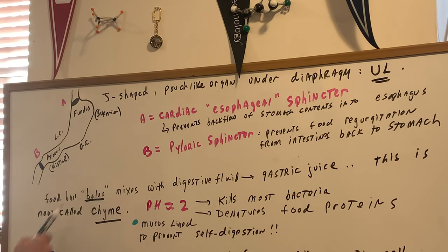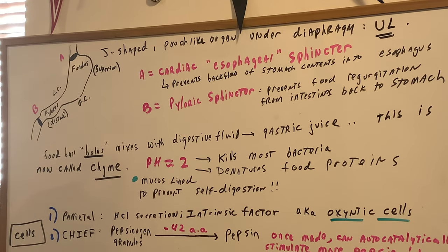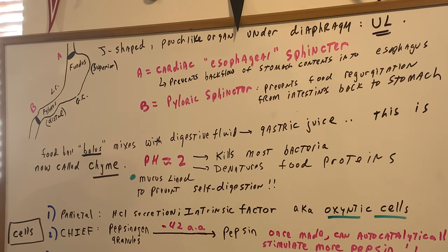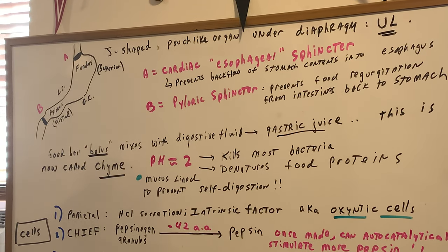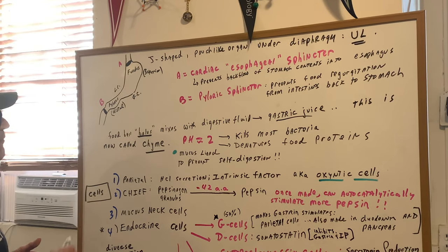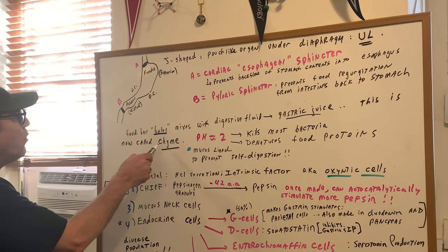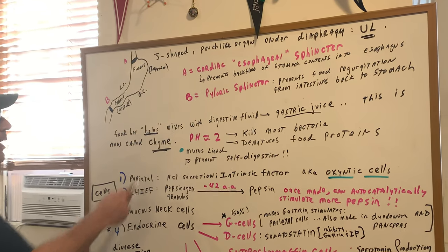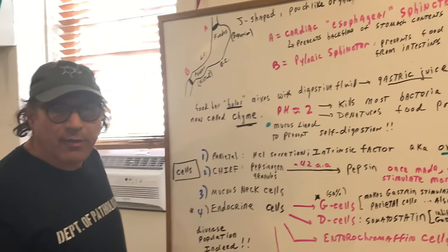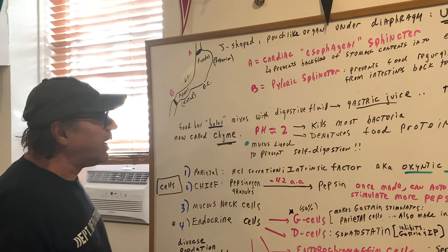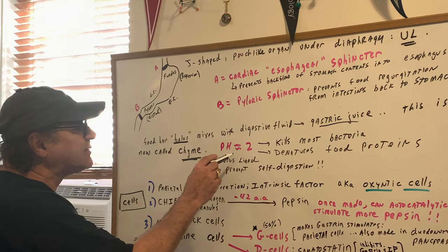You eat a bunch of food, it causes it to ball up into a bolus. A bolus mixes with the digestive fluid and that gives us the gastric juice. When you mix the food bolus with the digestive fluids we make what's called chyme. You should understand that the pH of the stomach is around 1.5. I call it 2 here to keep life simple, so that's not a definite number but you get the idea. Very acidic.